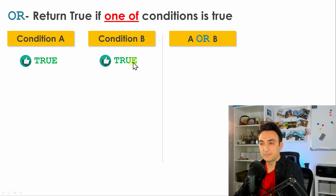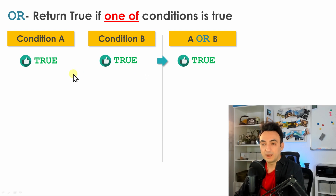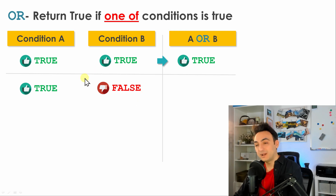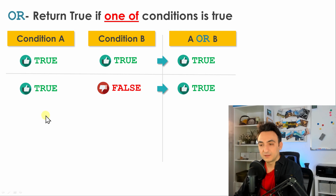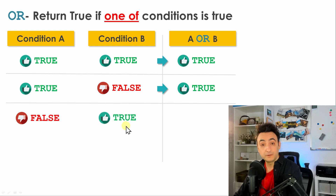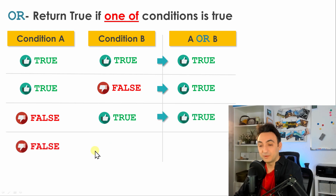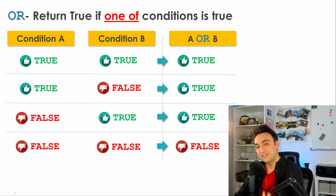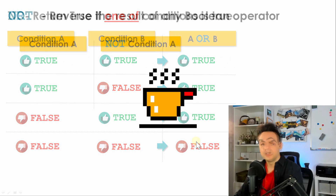First scenario: A is true and B is true — both fulfilled, so OR gives true. Next: A is true, B is false — at least one is true, so OR gives true. The opposite: A is false, B is true — requirements fulfilled, at least one is true, so we get true. Only the last scenario where both are false gives false. The OR operator is less strict than AND — if there's any true anywhere, you get true and more results.